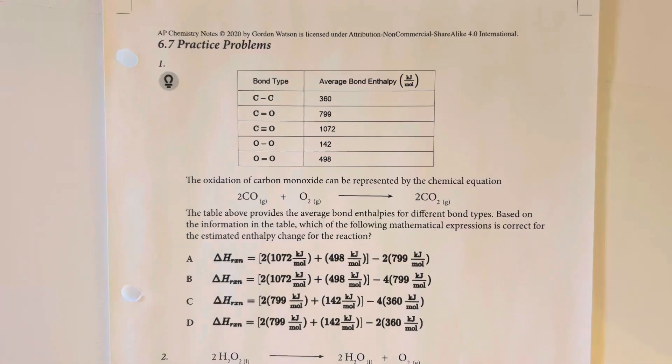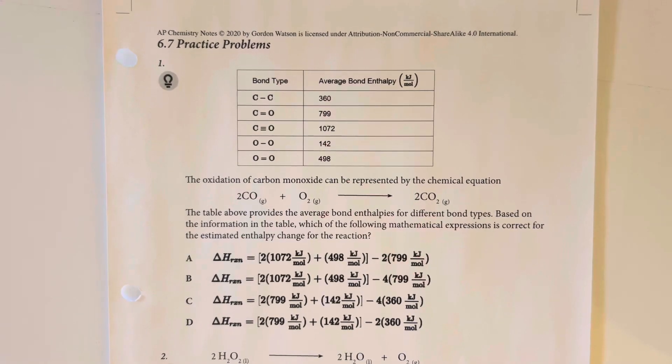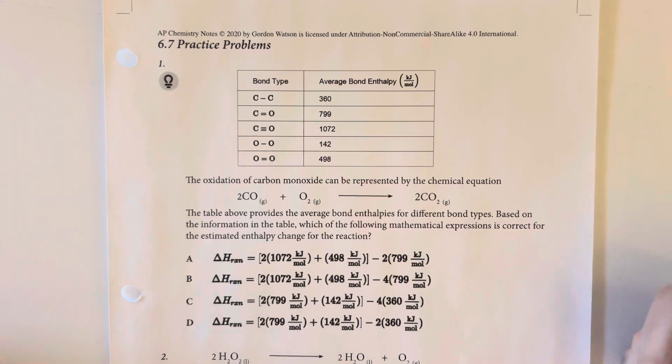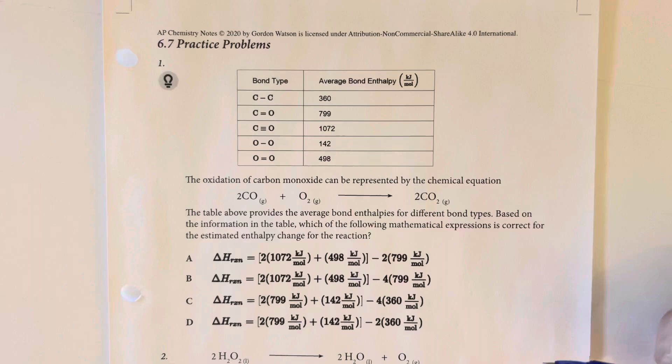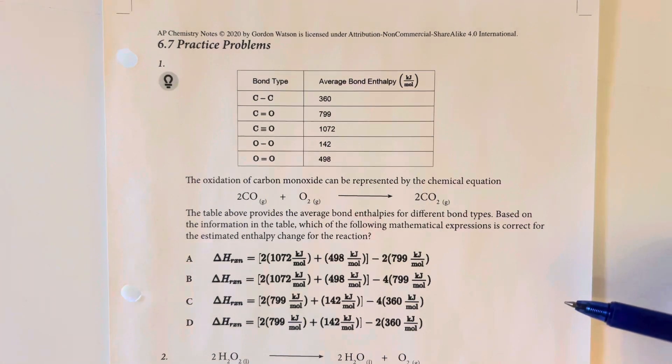6.7 practice problems. The oxidation for carbon monoxide can be represented by the chemical equation below. The table above provides the average bond enthalpies for different bond types. Based on the information in the table, which of the following mathematical expressions is correct for the estimated enthalpy change for the reaction?